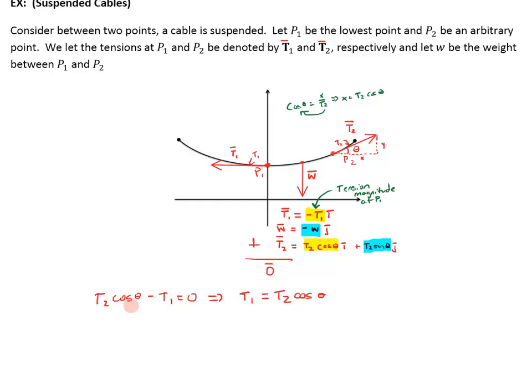Now, over here, since W is negative plus T2 sine of theta, that tells us that T2 sine of theta minus the weight of that section has to equal zero, or T2 sine of theta is W.